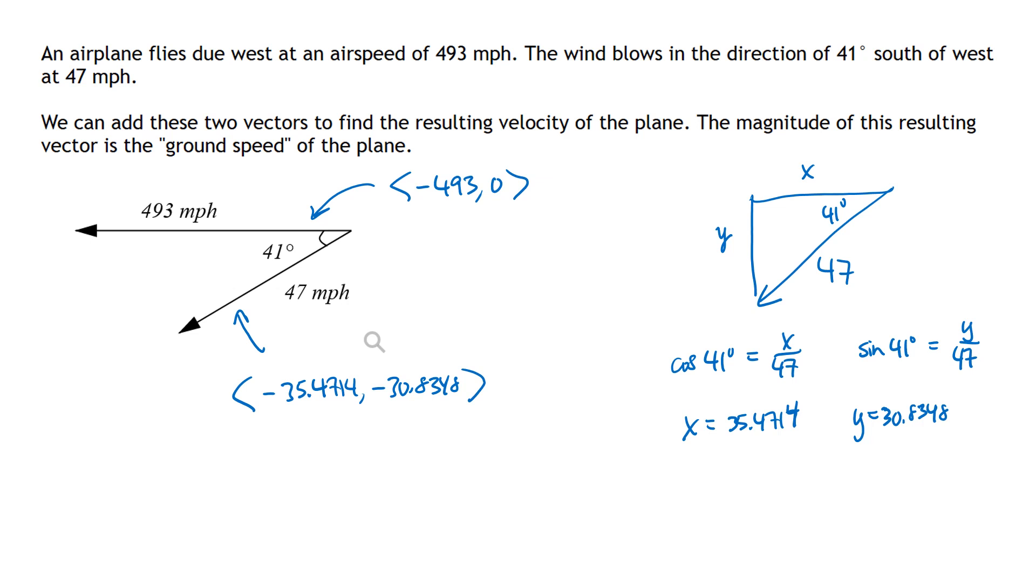So the resulting vector, the resulting velocity of this plane, if I think about my parallelogram rule, I don't quite have enough room on my screen to draw the full parallelogram, but that vector is going to look like that. So this is the resulting velocity.